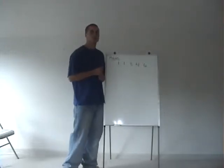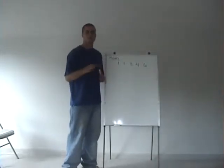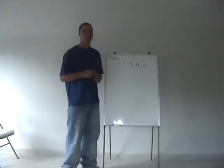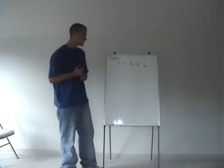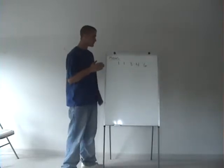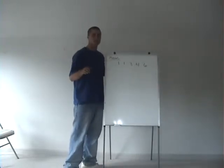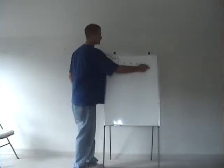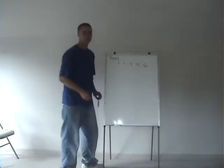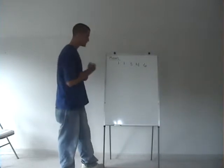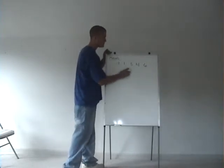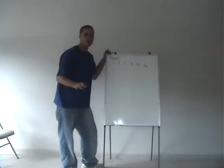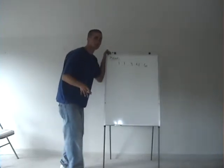The mean is also called the average of a set of numbers. To find the mean, just add them all up and divide by the amount of numbers that there are.